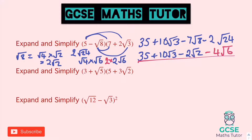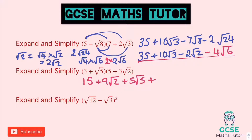On to the middle one. 3 times 5 is 15. 3 times 3 root 2 is 9 root 2. Root 5 times 5 is 5 root 5. And root 5 times 3 root 2 is 3 root 10. Checking those: 9 root 2 doesn't simplify, 5 root 5 doesn't simplify, and 3 root 10 doesn't simplify either. So that's our final answer — quite a nice one.